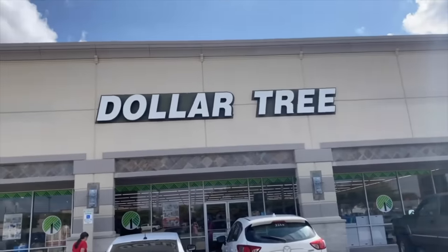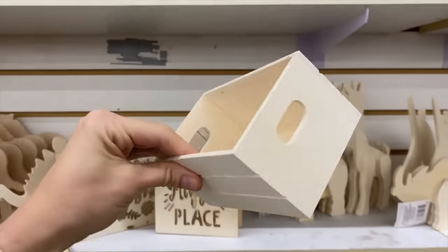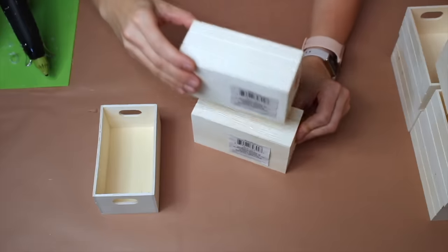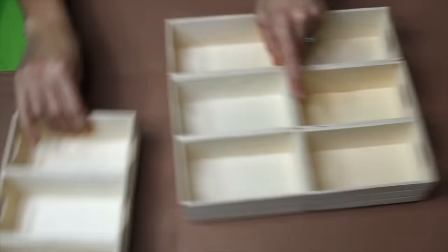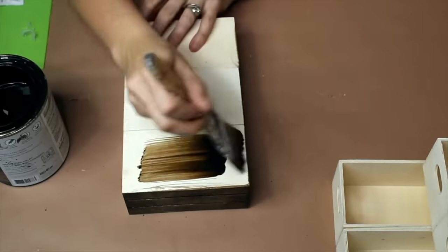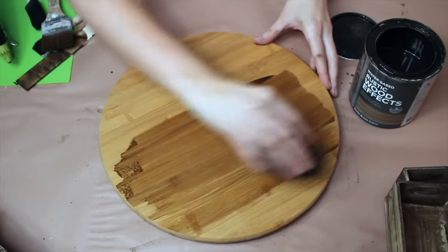We're going to start with 12 of these really cute little crates from Dollar Tree. First, going to glue them together. We are going to be using some wood stain. We are going to stain this as well.